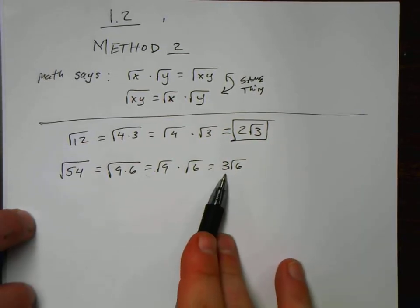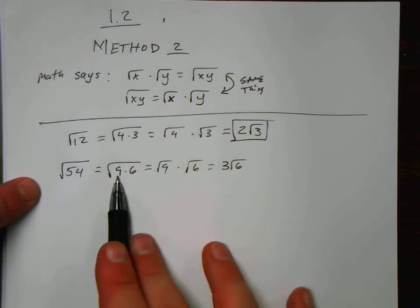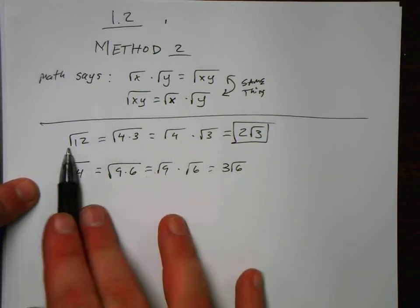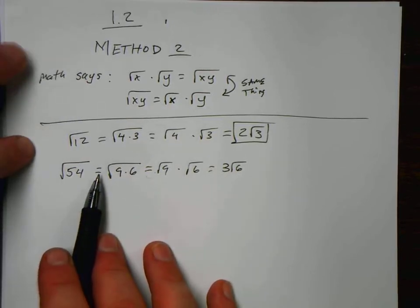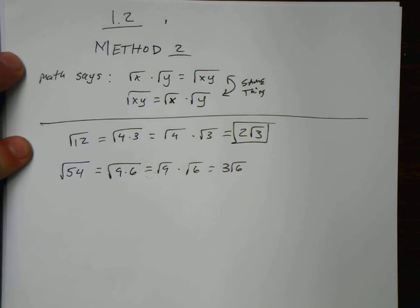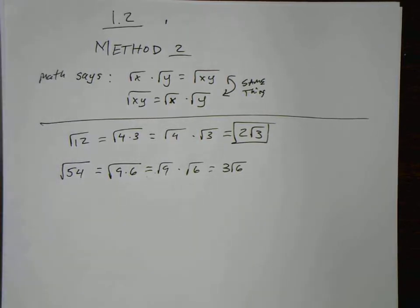That might be something that some of us are a little bit easier at, picking out perfect squares that are factors of other numbers. If you have that skill, then method number 2 is going to be much more helpful. If you're good with method number 1, don't worry about method number 2. Stop this video and go back to what you're doing and keep going.